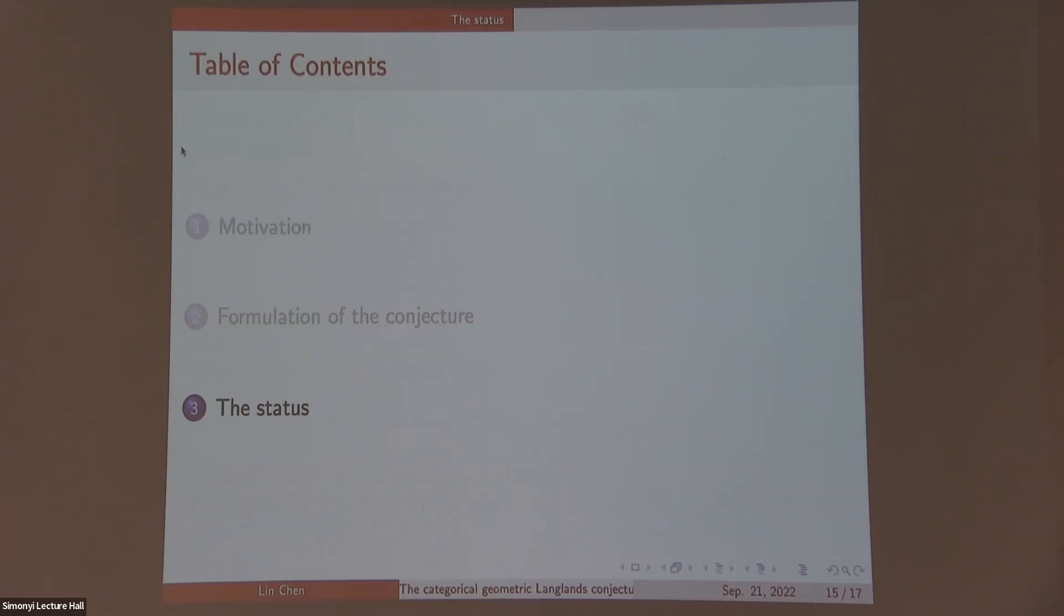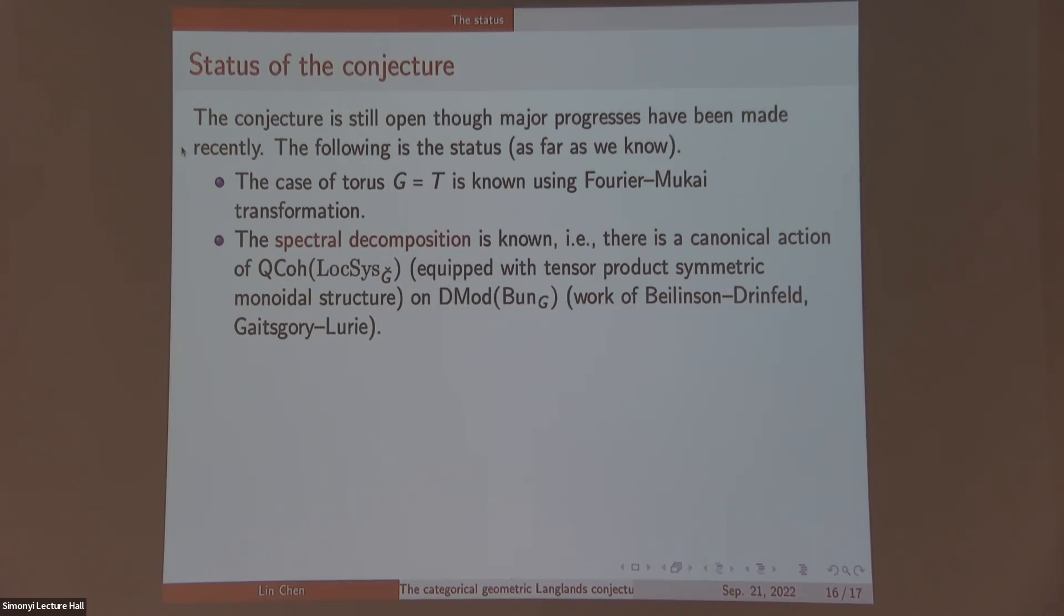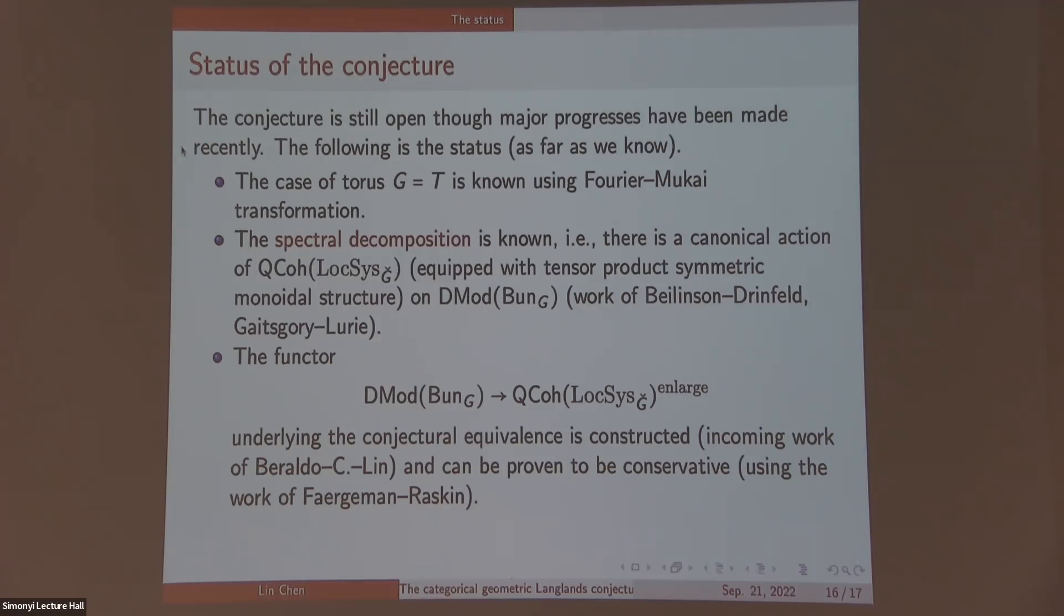Now let me tell you the status of these conjectures. It's still open, but recently, I mean in the past year or so, some major progresses have been made. First, of course, the torus case is well known like in the 80s or 90s. It's just Fourier-Mukai transformation. The spectral decomposition is known, that is, there's a canonical action of Qcoh Loc_SG-check on D-mod Bun_G. This is due to the work of Beilinson-Drinfeld and later work on conformal blocks and due to unpublished work of Gaitsgory-Lurie.